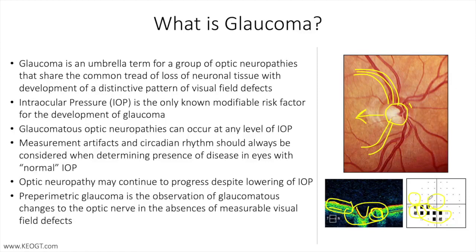There is the possibility of a superior nasal step, inferior nasal step, and unfortunately in some cases you can get central and paracentral defects that can affect central vision. It should be noted that the findings between optic nerve head exam, Humphrey visual field, and OCT are frequently asynchronous. Humphrey visual field deficits may lag findings on the optic nerve head exam and RNFL-OCT, in which case we refer to the stage of the disease as pre-perimetric glaucoma, meaning it has not manifested on the more subjective Humphrey visual field perimetry.